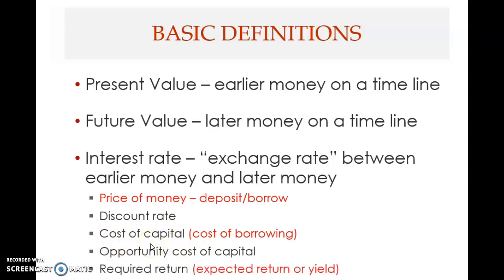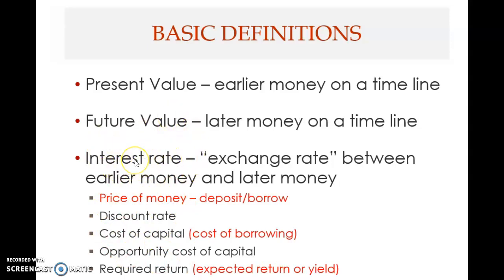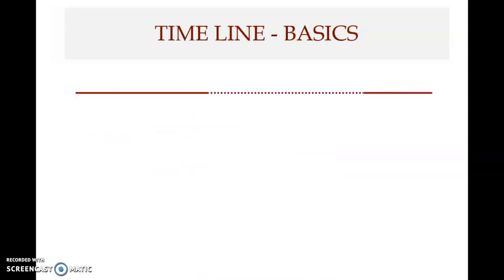Interest rate can also be seen in compensation terms as required return, expected return, or yield. Yield means what you get — what is produced. A deposit will yield or produce interest. So all these different terms — discount rate, cost of capital, required return, yield — refer to the same broad concept: the interest rate.